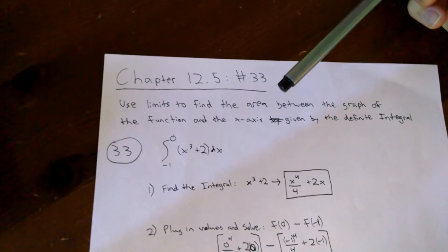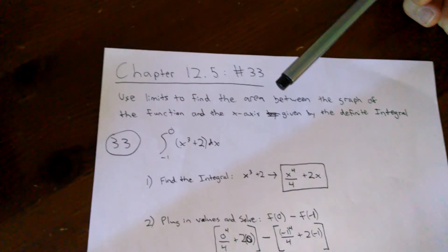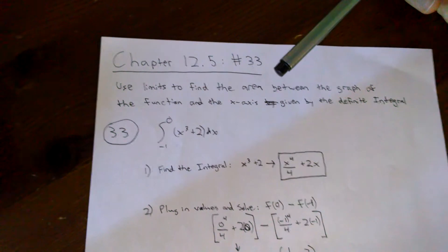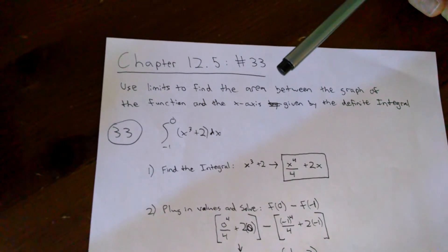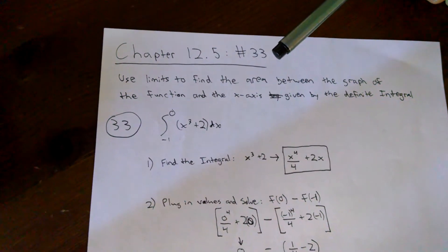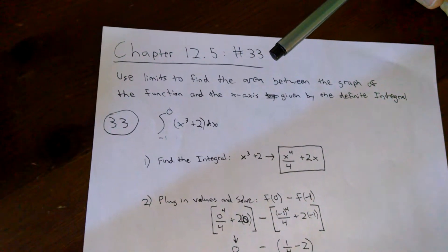In this video, I'll go over question number 33 from chapter 12-5. This question asks us to use limits to find the area between the graph of the function and the x-axis given by the definite integral. For number 33, we have the definite integral from 0 to -1 of the function x³ + 2.